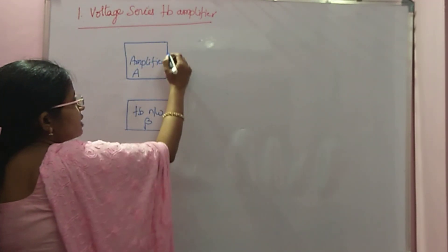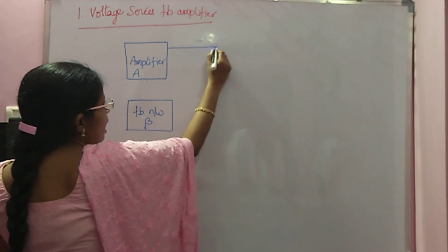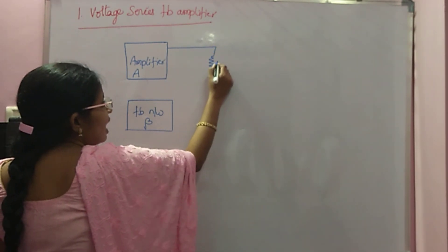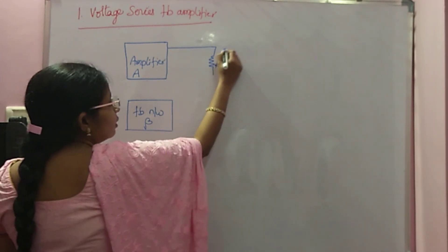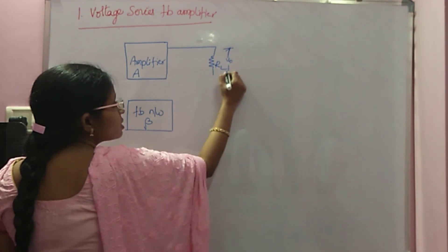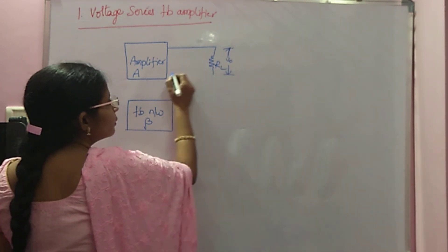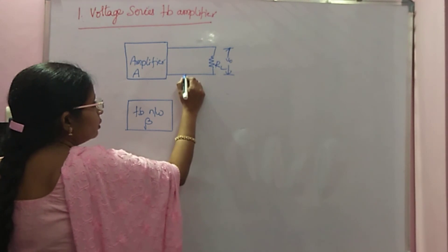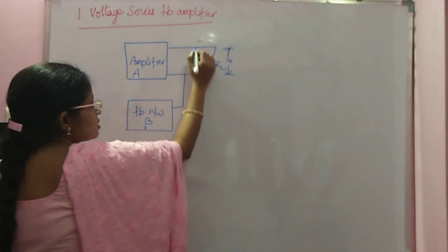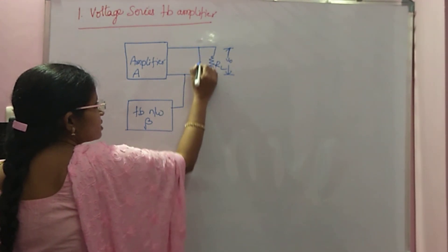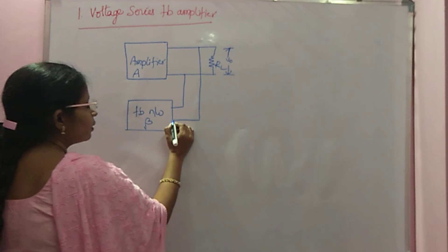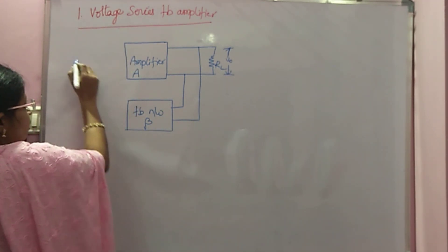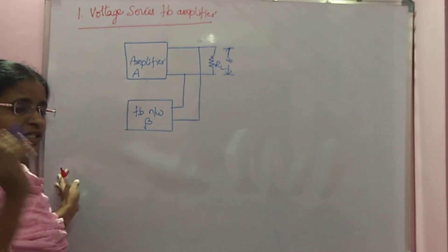A may be AV (voltage gain), AI (current gain), RM (transresistance), or Gm (transconductance). Now for voltage series, the sampling type is voltage sampling, and the mixing is series mixing.